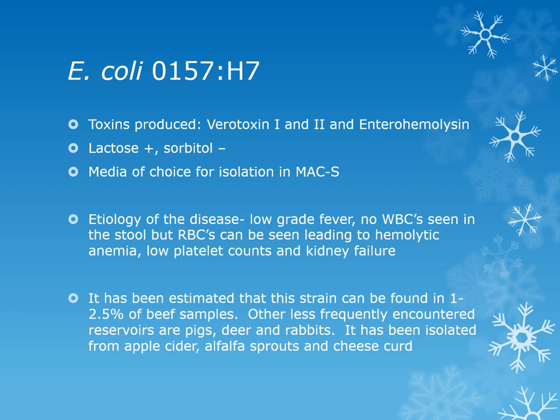When people have E. coli O157:H7, they often have a low-grade fever. There are no white cells seen in the stool, but occasionally red cells are seen, leading to hemolytic anemia, low platelet counts, and kidney failure. Hemolytic uremic syndrome occurs when toxins from E. coli enter the bloodstream and destroy red cells — kidneys fail trying to filter out shards of broken RBCs. This strain is found in 1–2.5% of beef samples. There is a human vaccine in progress, and a cattle vaccine already exists.